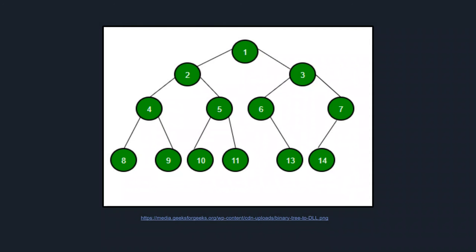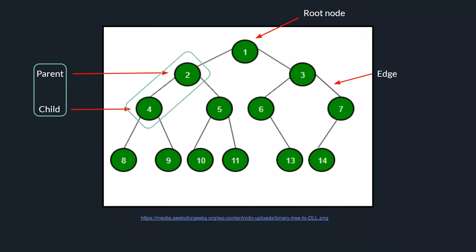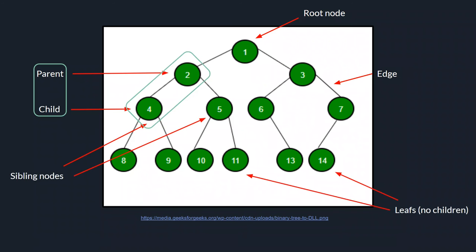Here's a bit of terminology. The root node is the node that has a path to all of the other nodes in the tree, and it's the only node that's not a child. Edges are the connections between the nodes. The parent-child relationship: if there's an edge from 2 to 4, then 4 is a child of 2. Because both 4 and 5 are children of 2, we call them sibling nodes. The leaf nodes at the most bottom layer that do not have children are the leaves in the binary tree.